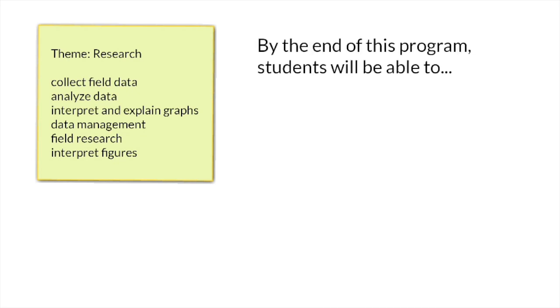Let's look at how to write a learning outcome. On the right-hand side you'll see the stem for all learning outcomes: 'by the end of this program, students will be able to.' You want to define which program you're talking about — in this case, the honor specialization in agricultural science. On the left-hand side is a theme — research in this case — as well as a list of essential program learning beneath, which is the result of a brainstorm about key ideas that students need to be able to do, value, or know by the end of the program.